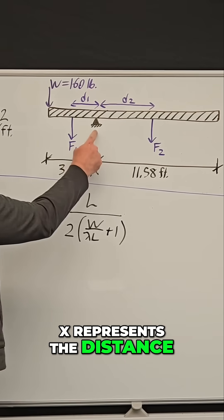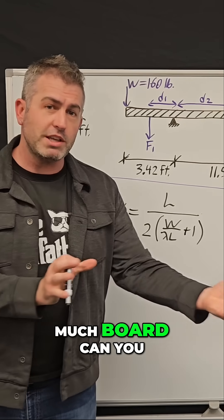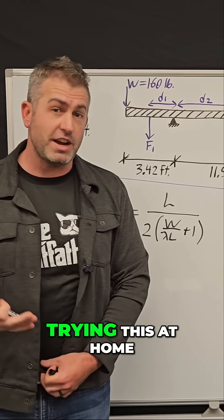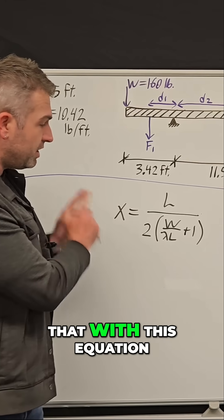X represents the distance from the fulcrum to the edge. So X is how much board can you hang over the table? So if you were trying this at home, which you shouldn't, you could actually calculate that with this equation.